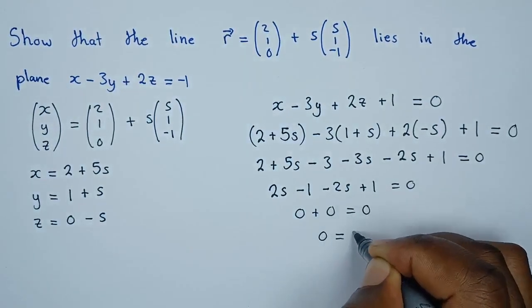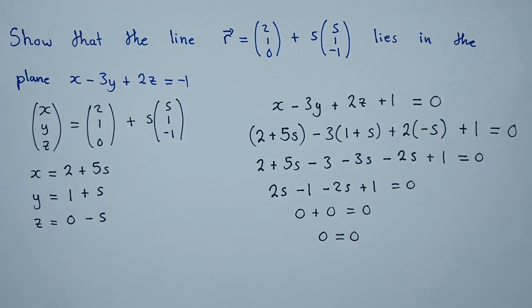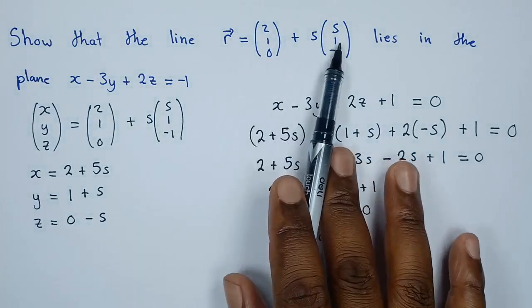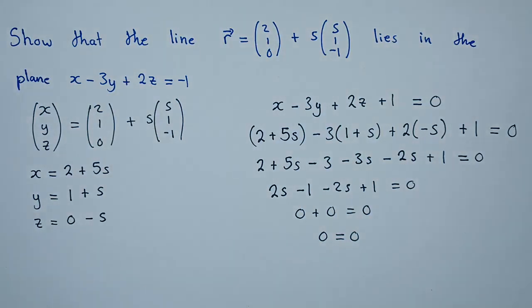Zero equals zero. This shows that the line lies in the plane, since after substituting we got zero. This proves that the line in vector form lies in this plane. That's how it's done, thank you very much.